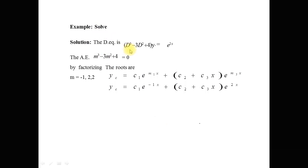Another example: (D³ - 3D² + 4)y = 0. This is a differential equation of higher order. The auxiliary equation is m³ - 3m² + 4 = 0. After factorizing using synthetic division as discussed in the previous slide, we obtain the roots -1, 2, and 2. The first root is real and different, and the other two roots are real and repeated. The complementary solution is yc = c1·e^(-x) + (c2 + c3x)·e^(2x).